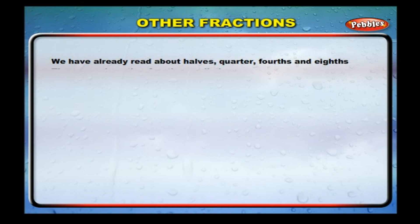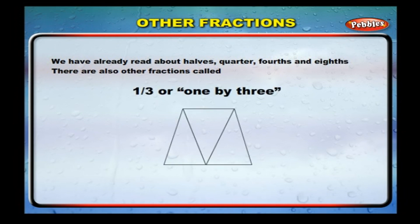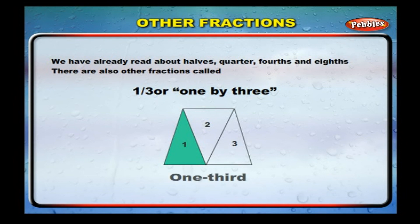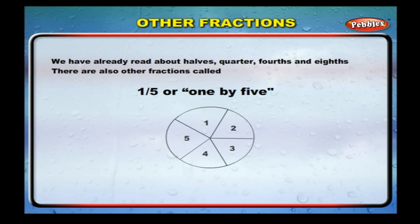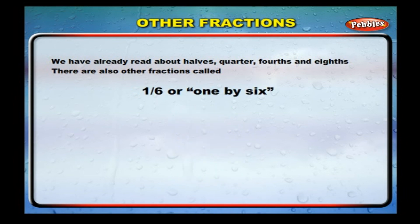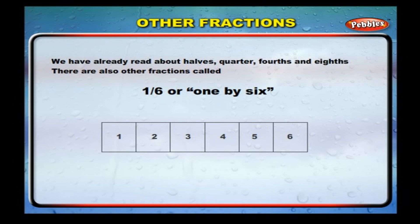Other fractions: we have already learned about halves, quarters, fourths, and eighths. There are also other fractions. One by three: when one part of the three parts is shaded, it is called one-third. One by five: when one part of the five parts is shaded, it is called one-fifth. One by six: when one part of the six parts is shaded, it is called one-sixth.